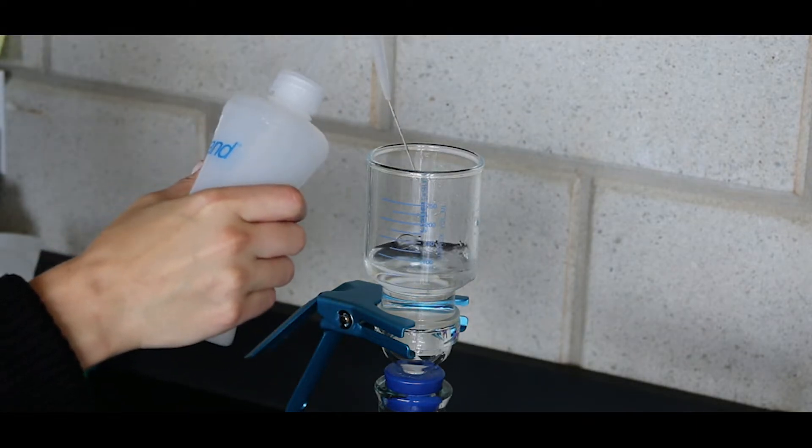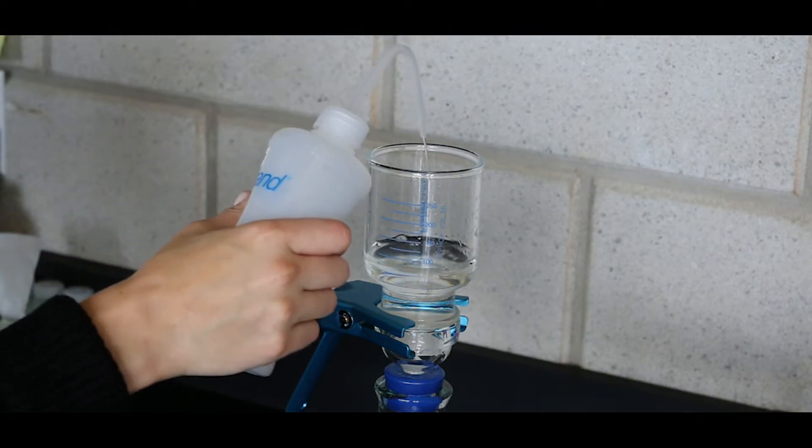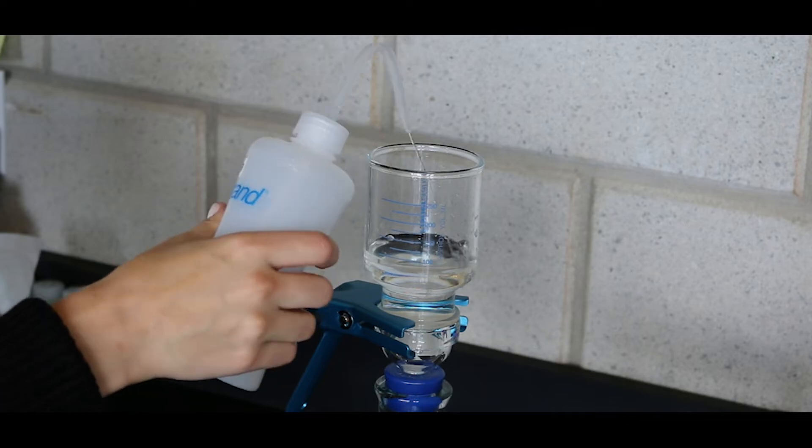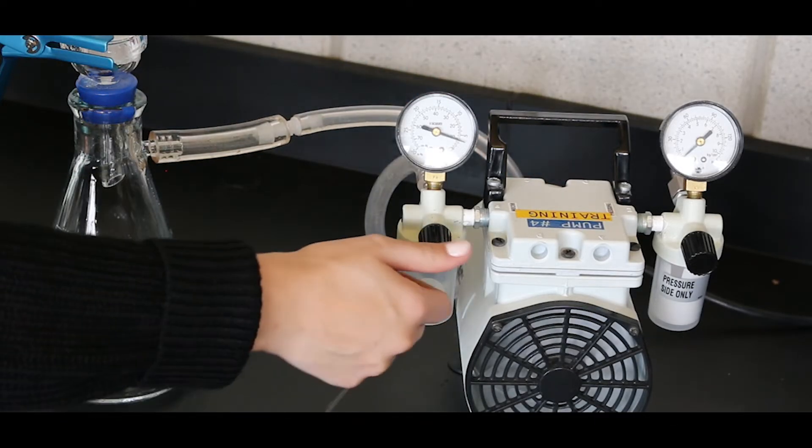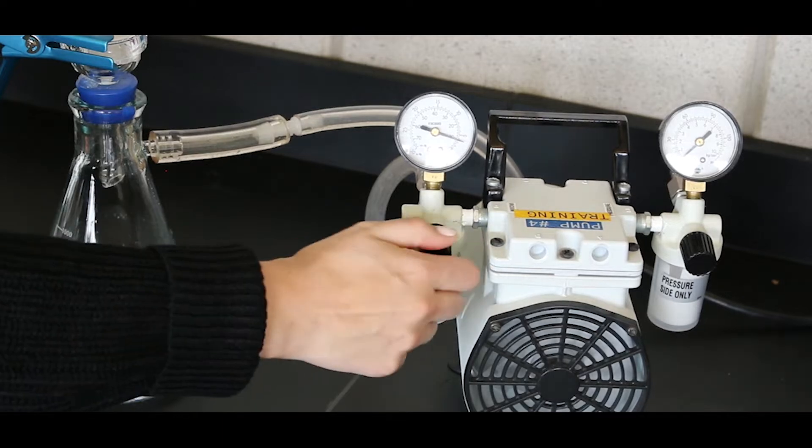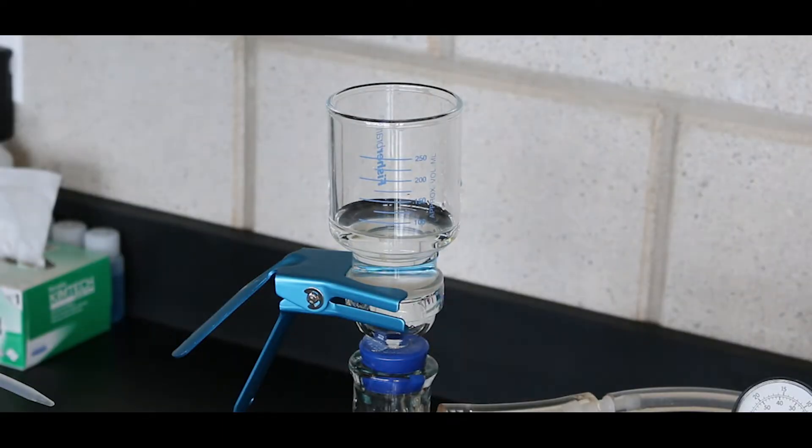Dispense approximately 100 milliliters of deionized water into the funnel, rinsing the sides of the glassware as you go. Turn on the vacuum pump and adjust as necessary. Turn the pump off when the water line drops below the filter.